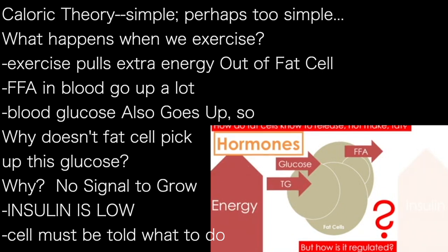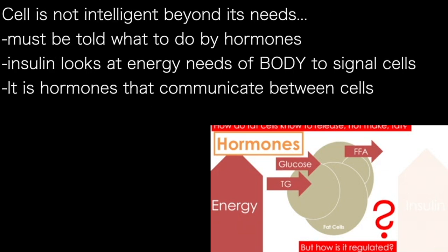We cannot assign a level of intelligence to a cell that it doesn't have. A cell must be told what to do — like the fat cell should just know what to do with the energy, but it does not. It must be told what to do based on the input and the overall energetic state of the entire body. A cell alone doesn't understand what's going on in the entire body. It's hormones that tell one cell here what's going on. It's hormones that communicate the overall needs of the body from one cell to the other, lest any cell become too selfish and only care about itself.